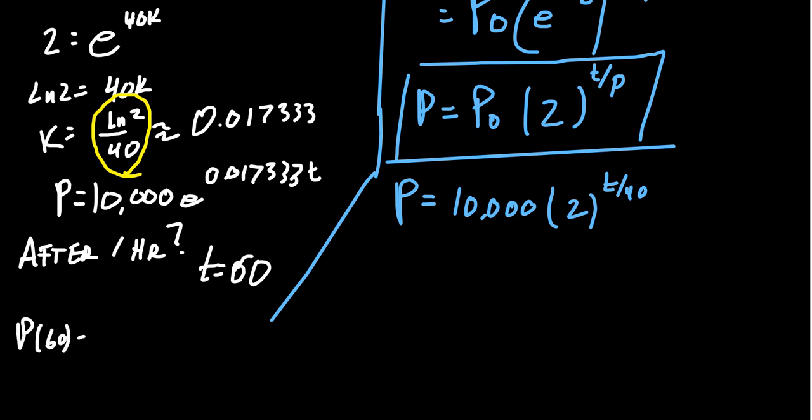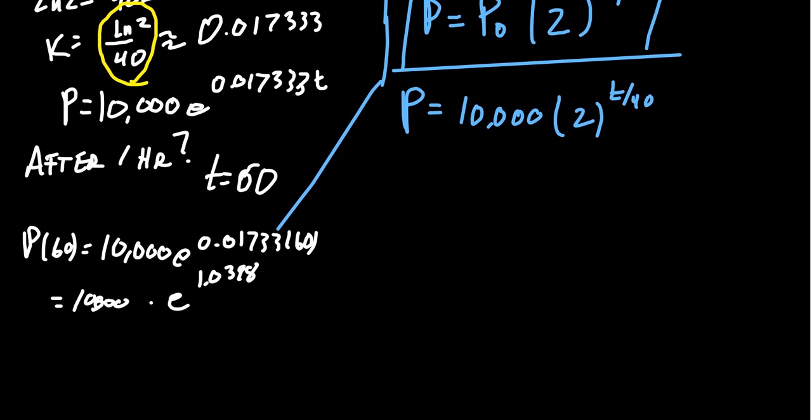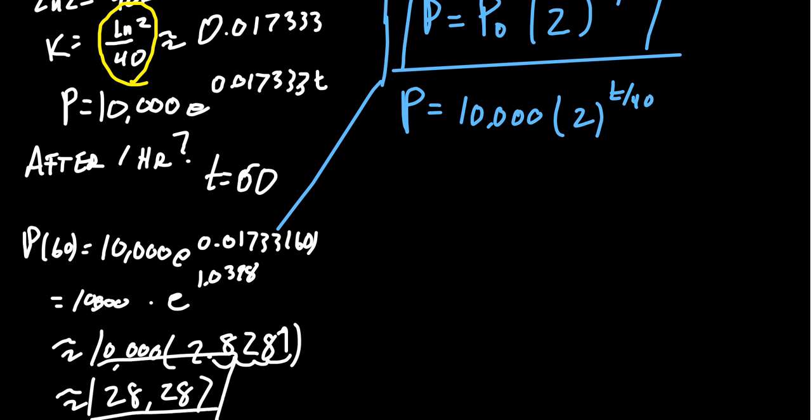We have to compute P of 60. So we're going to get 10,000 times e to the 0.01733 times 60. If you compute that exponent, you're going to get e to the 1.0398 times that by 10,000. Raise e to the 1.0398 power. That'll give you approximately, so I'm just going to write down the 10,000 again. You're going to get approximately 2.8287. You want to have a lot of decimal places because you're moving by, you're going to times it by 10,000, which is going to move your decimal places over a bunch. And so then our estimate would look something like 28,287. That's our estimate of the population of bacteria after 60 minutes using the first model.